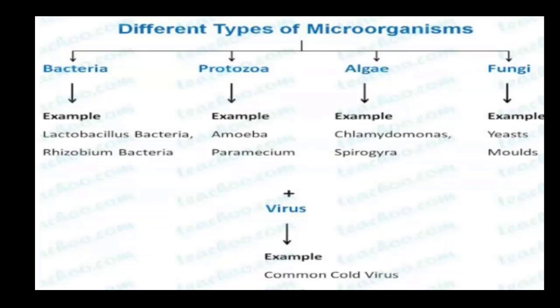The examples for each type are: bacteria — Lactobacillus bacteria; protozoa — amoeba; algae — Chlamydomonas; fungi — yeast; and virus — common cold virus. These are the most important examples of each type of microorganism.